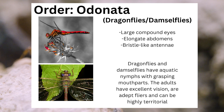Insects in the order Odonata, known as dragonflies and damselflies, can be characterized by their large compound eyes, their long abdomens, and their bristle-like antennae. Dragonflies and damselflies have aquatic nymphs with grasping mouthparts. The adults have excellent vision, are adept flyers, and can be highly territorial.